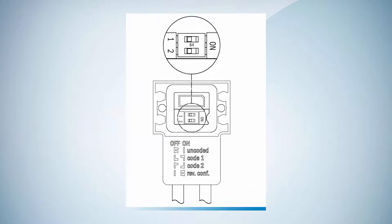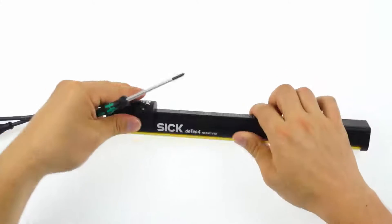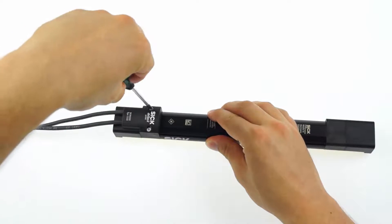The new DTEK 4 Prime incorporates a beam coding function to prevent the devices from being influenced by a second system. To configure beam coding, disconnect the device from the power supply.